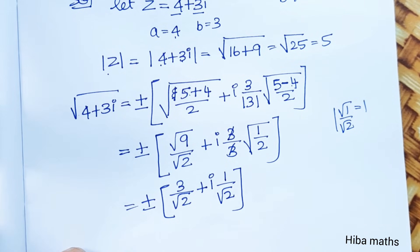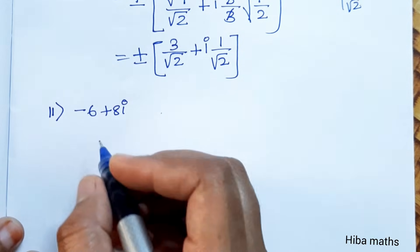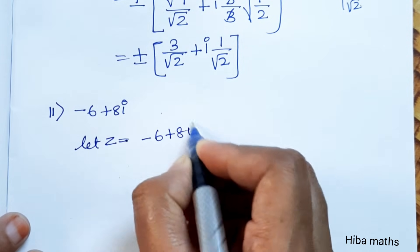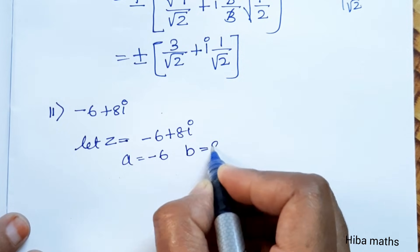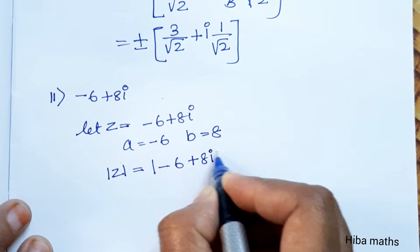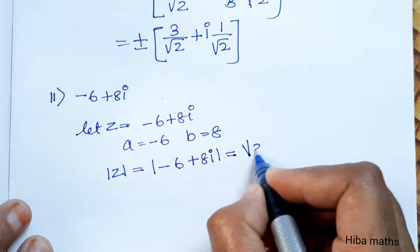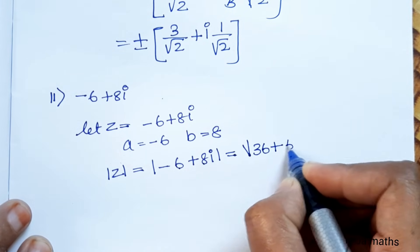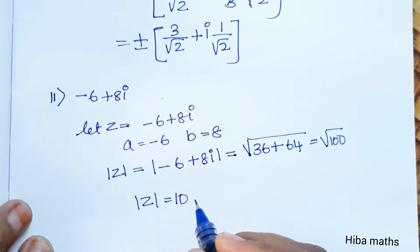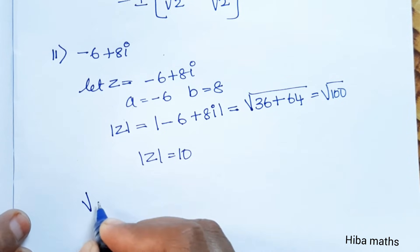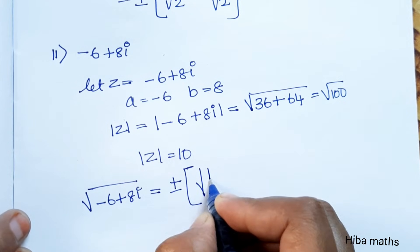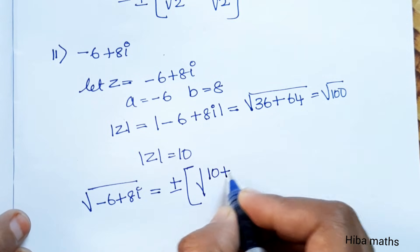Now we understand the second subdivision: root of (-6 + 8i). Let z = -6 + 8i, so a = -6 and b = 8. Mod z = |(-6 + 8i)| = root of (6 squared + 8 squared) = root of (36 + 64) = root of 100. Mod z = 10.